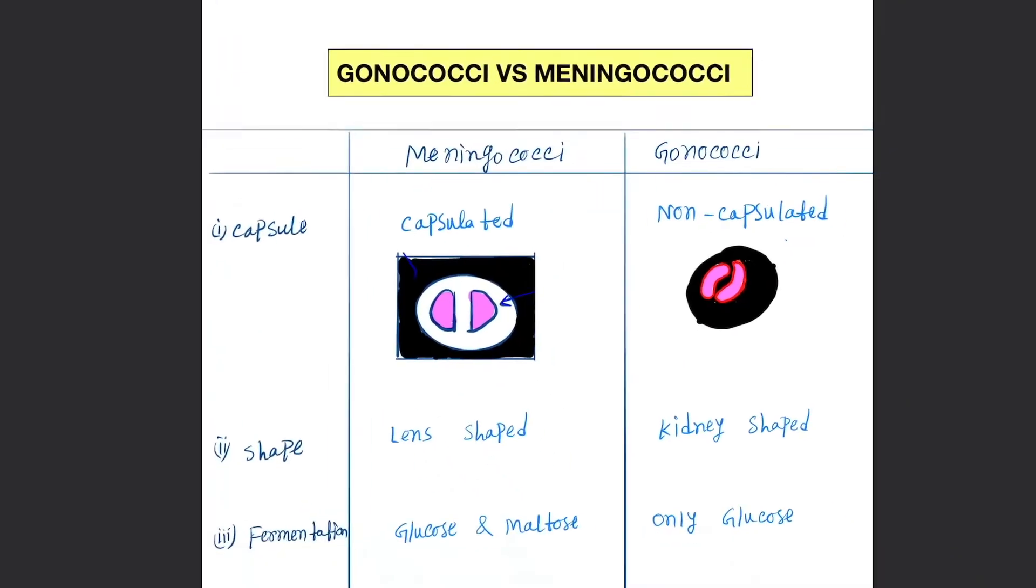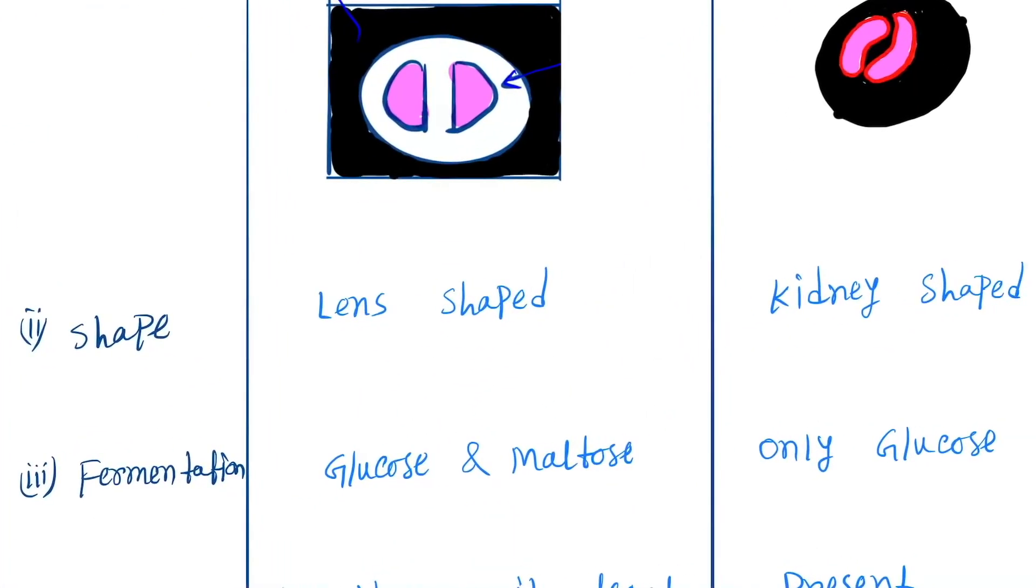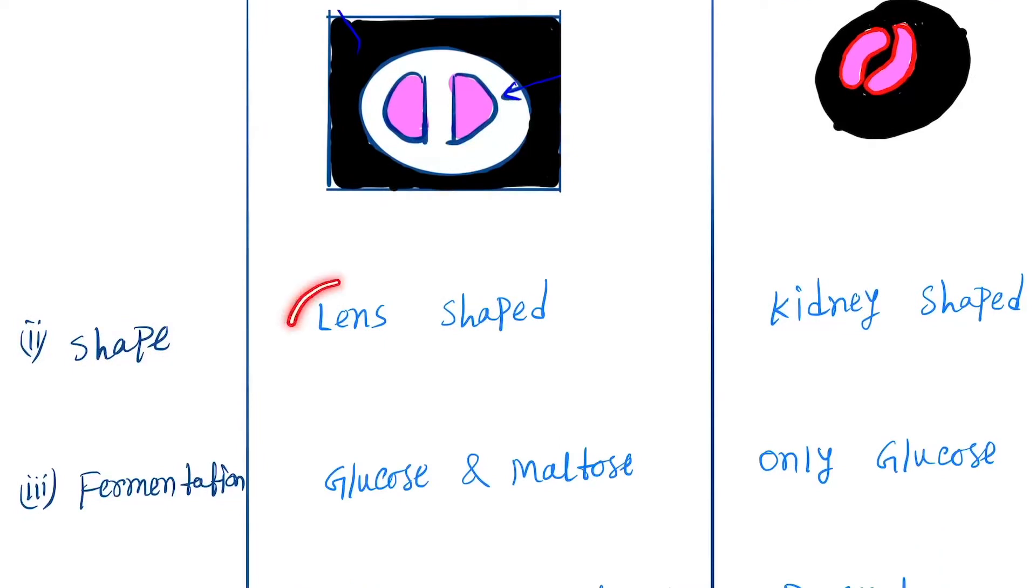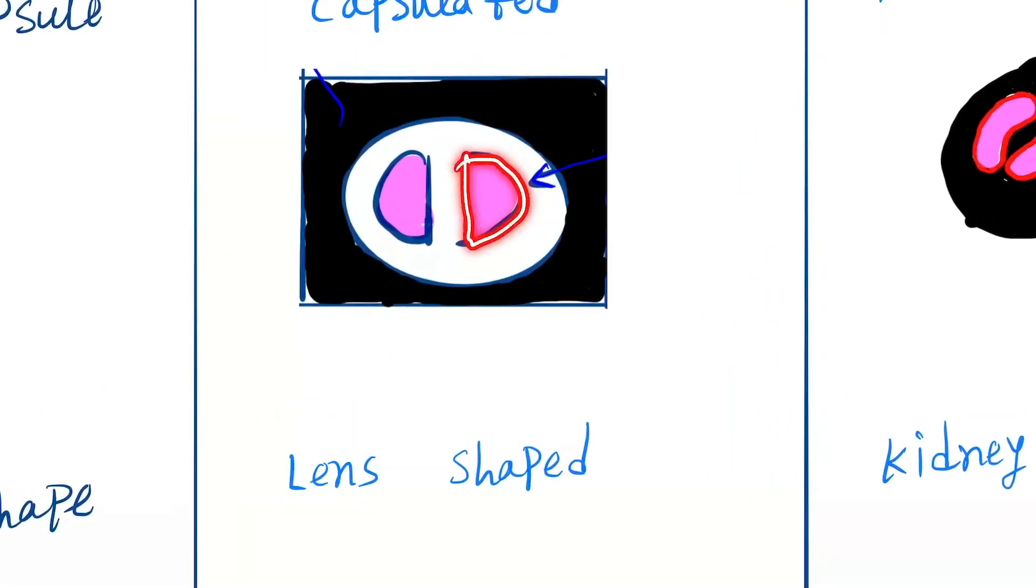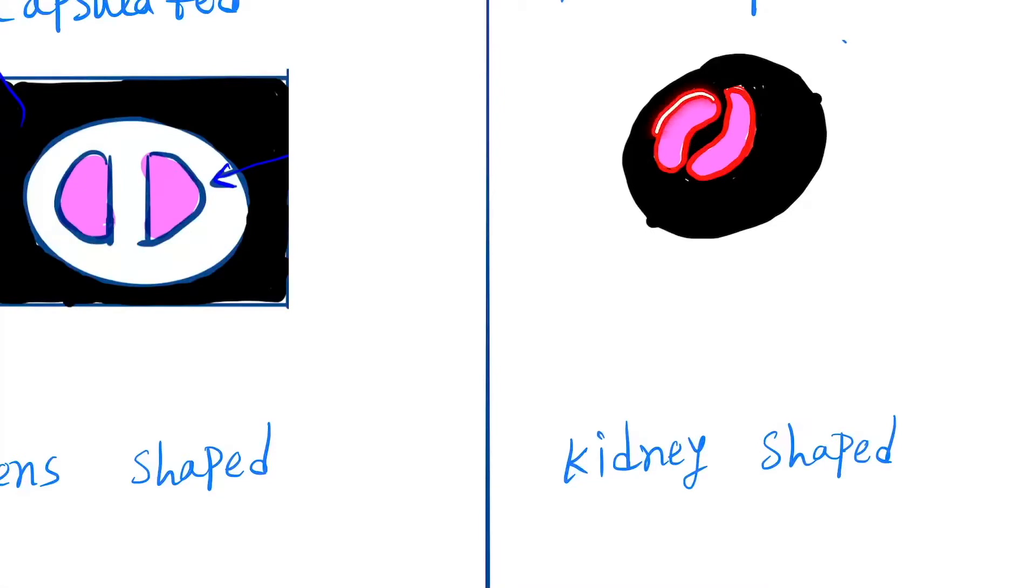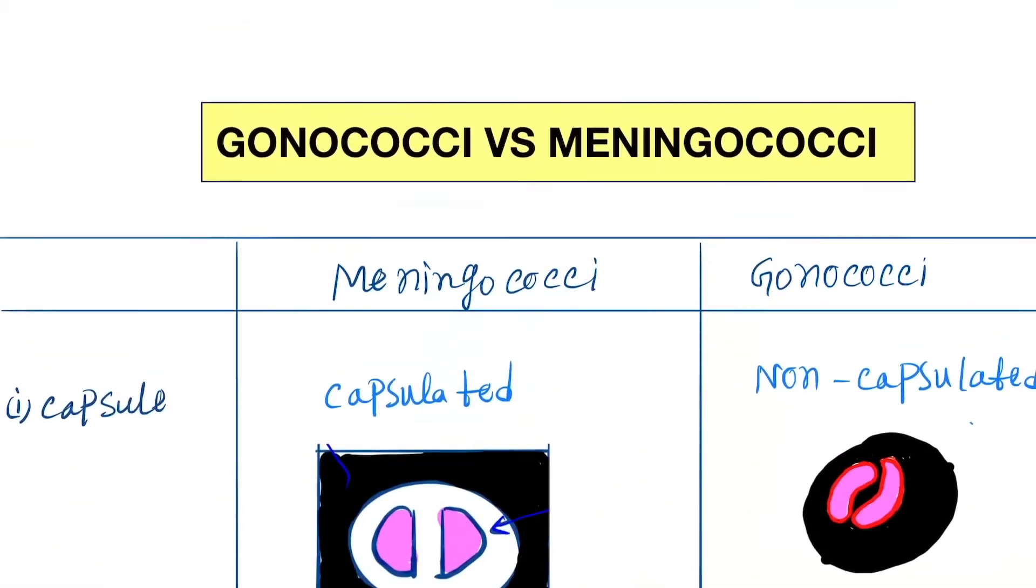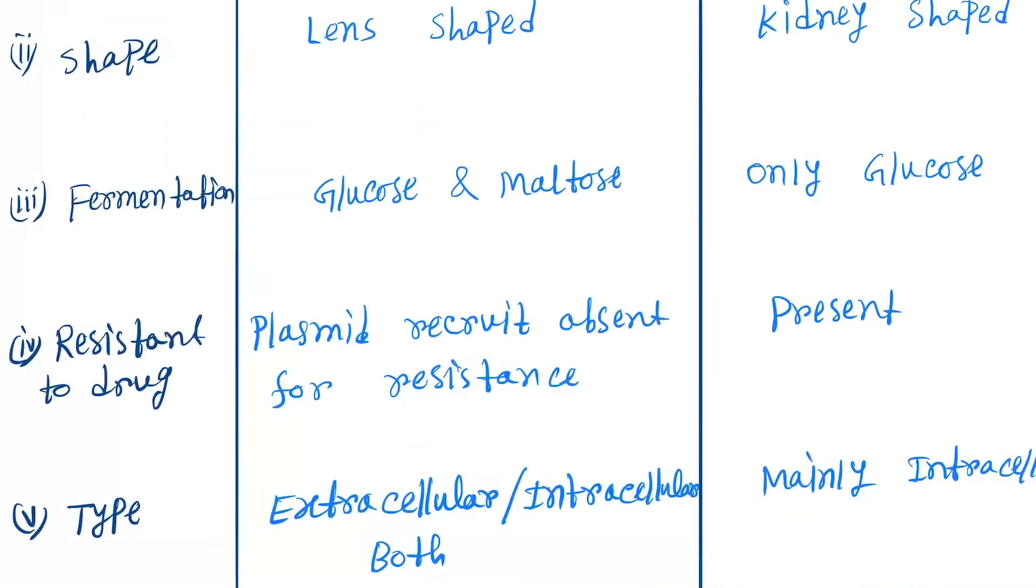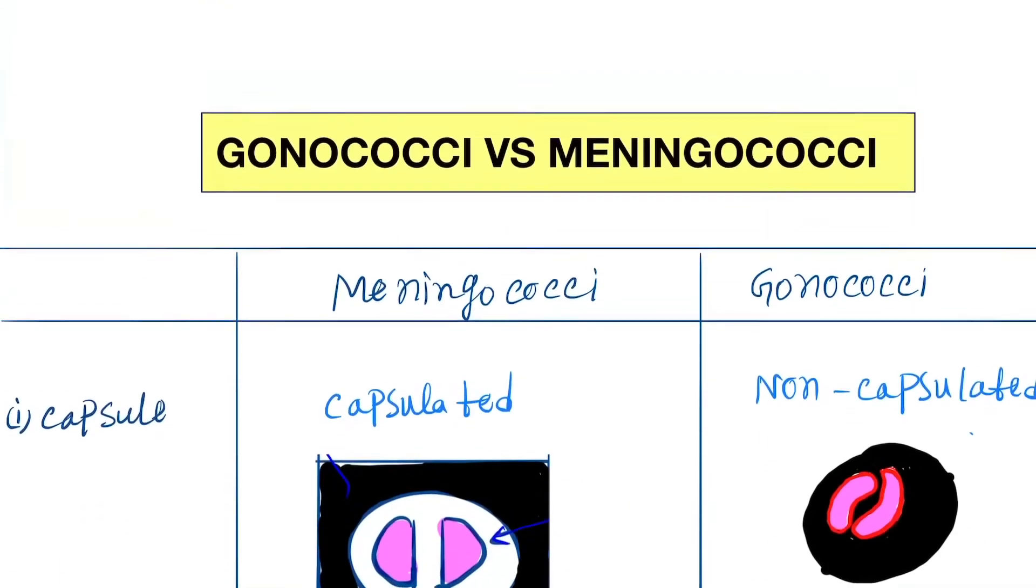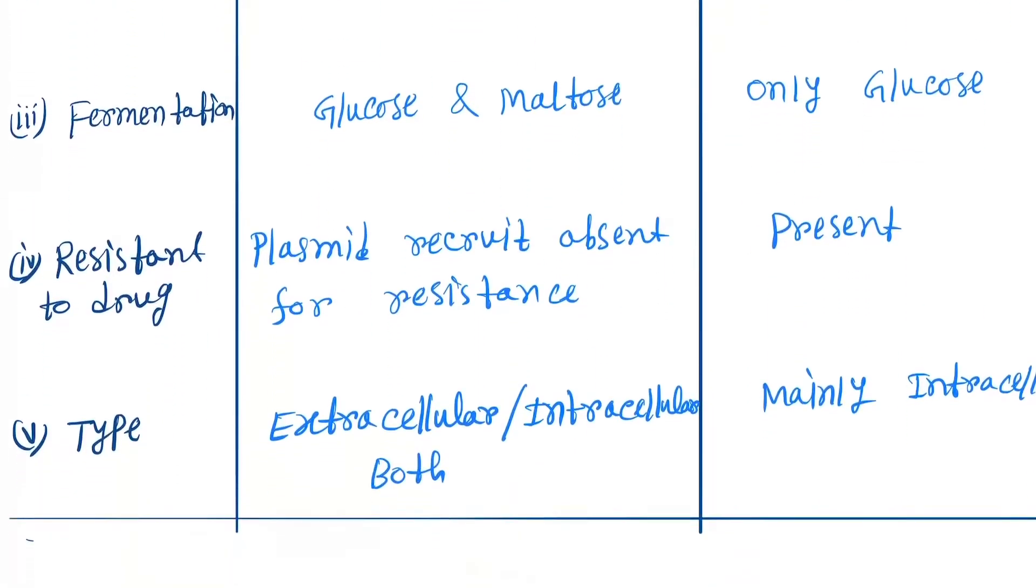Next is shape. Gonococci is lens shaped, you can see lens shape here. Meningococci is kidney shaped. Now fermentation: meningococci ferments both glucose and maltose, while gonococci ferments only glucose.